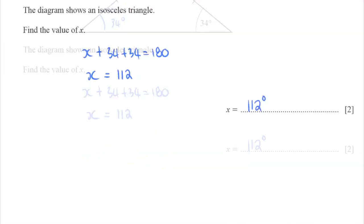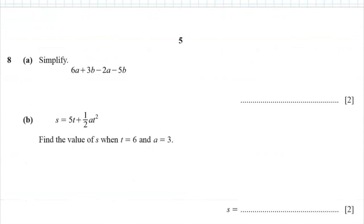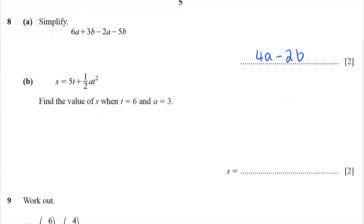It says simplify. Simplify probably means collect like terms. So let's collect 6a and the 2a. So 6a minus 2a is 4a. And 3b minus 5b turns into negative 2b. And I think, I don't know how it can show much working out for that. Maybe it's like a mark for each part.